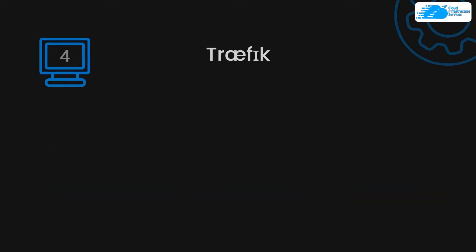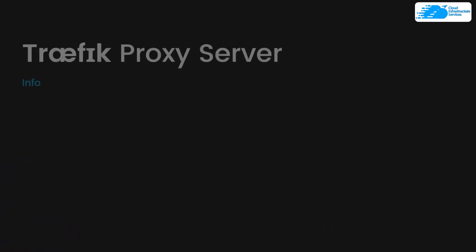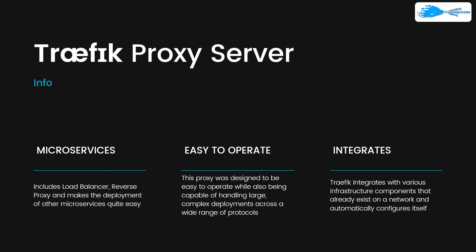Coming in at number four we have Traefik. The first key feature is microservices — by default it includes a load balancer and reverse proxy, and it makes the deployment of other microservices quite easy. It is also really easy to operate while being capable of handling large and complex deployments across a wide range of protocols. Additionally, Traefik integrates with various infrastructure components that already exist on a network and can automatically configure itself.